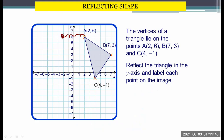First put the point. From this point we have 1, 2, 3, 4, 5, 6, 7 steps. So on the opposite side we draw 7 steps: 1, 2, 3, 4, 5, 6, 7. So this will be your B prime. This is your A prime.